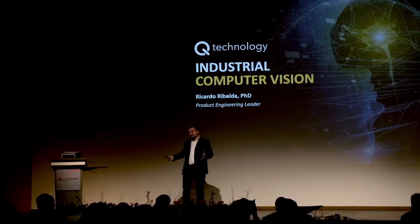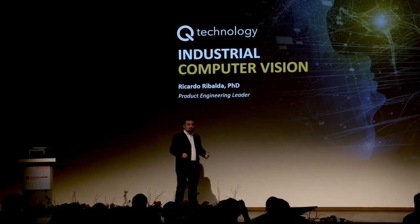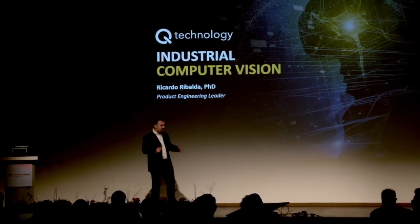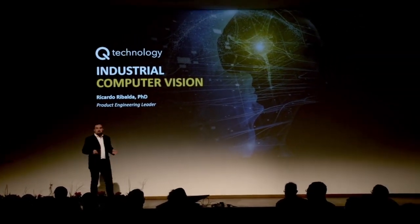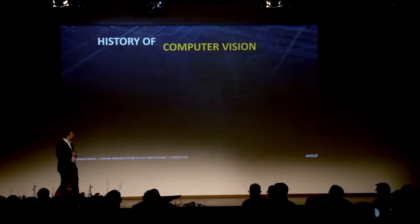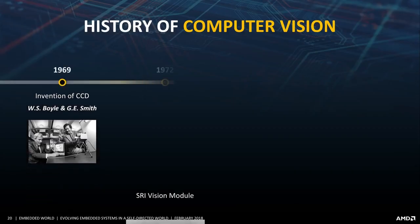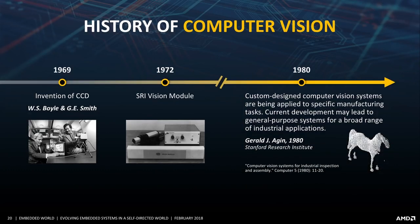Thank you so much, Mark. It's a great opportunity to be here. So industrial computer vision — let's start from the very beginning. The very beginning is 1969, when the CCD was invented. The CCD was the first way we were able to see images using silicon.